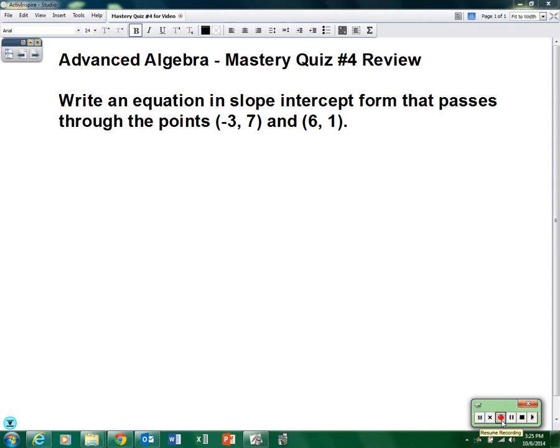Advanced Algebra Mastery Quiz number four review. Very short, one problem. The problem is to write an equation in slope-intercept form that passes through the points (-3, 7) and (6, 1). Well, first we're going to have to use the point-slope formula.